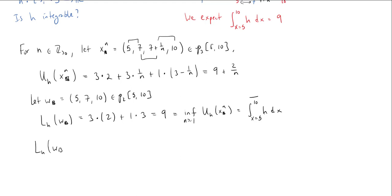This particular lower sum is already equal to the upper integral. I know that the lower integral is the supremum of all of the lower sums. We'll write the upper integral first. The upper integral is equal to this lower sum of w.